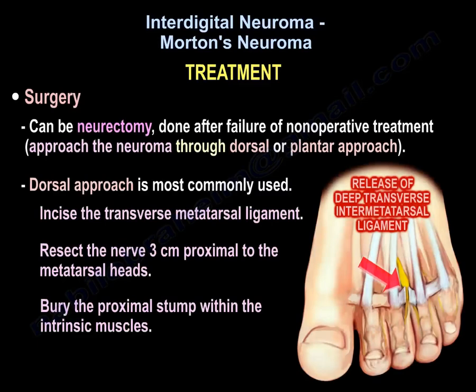Surgery can involve neuroectomy and is performed after failure of non-operative treatment. The neuroma can be approached through a dorsal or plantar approach; the dorsal approach is the one most commonly used. The transverse metatarsal ligament is incised, the nerve is resected three centimeters proximal to the metatarsal heads, and the proximal stump is buried within the intrinsic muscles.